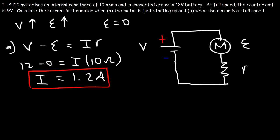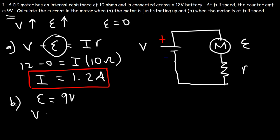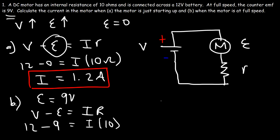Now for part b, let's calculate the current when the motor is at full speed. At full speed the counter EMF is 9 volts. Using the same formula: V is 12, the EMF is 9, and resistance is 10. So 12 minus 9 is 3, and dividing both sides by 10 gives us 3 divided by 10.